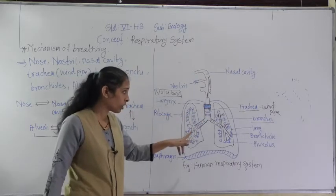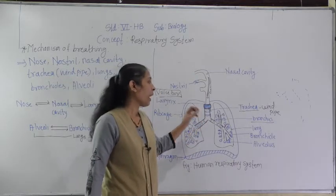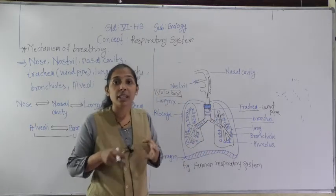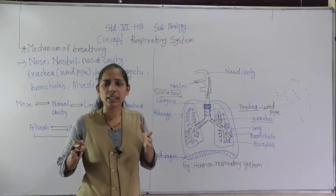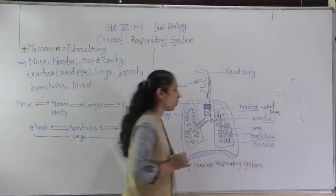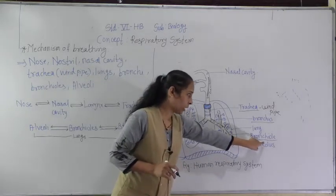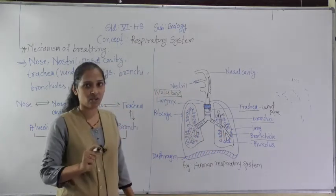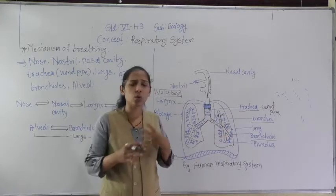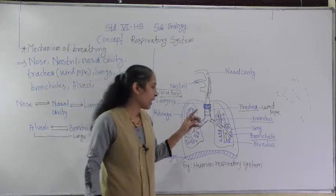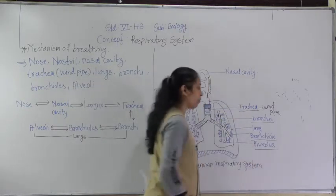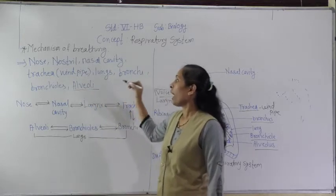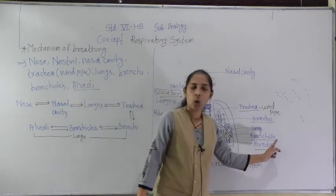The trachea has two branches called bronchi. The bronchi enter into the lungs and get further divided into smaller, thinner branches called bronchioles. At the end of each bronchiole, there are many sac-like structures called alveolus — singularly alveolus, and together we call them alveoli.